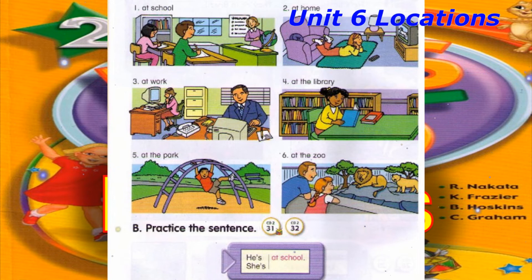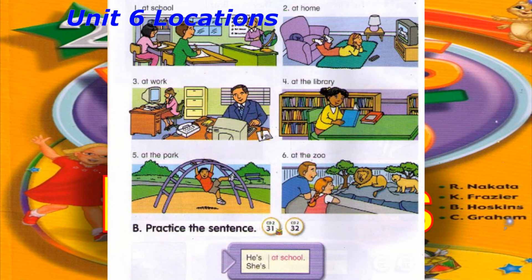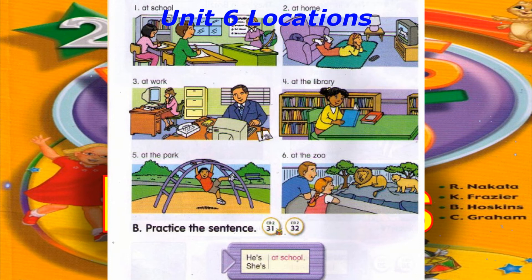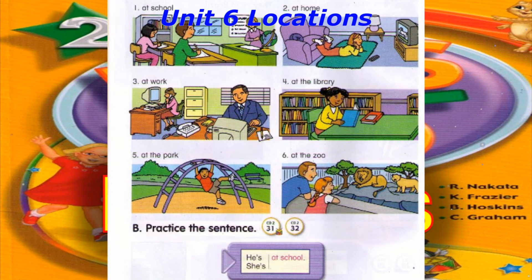Track 32. B. Practice the sentence. He's at school. She's at home. He's at work. She's at the library. He's at the park. She's at the zoo.